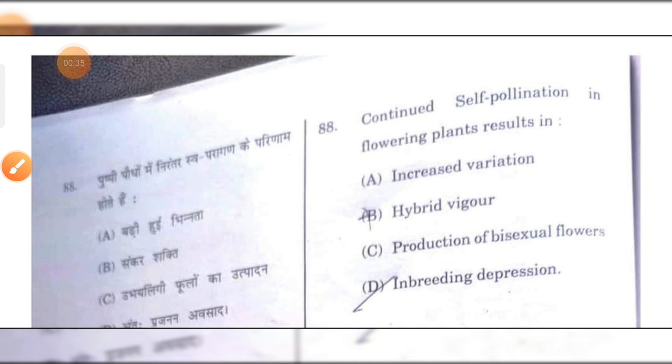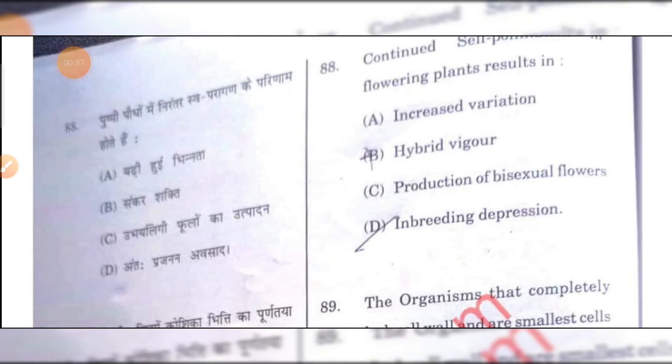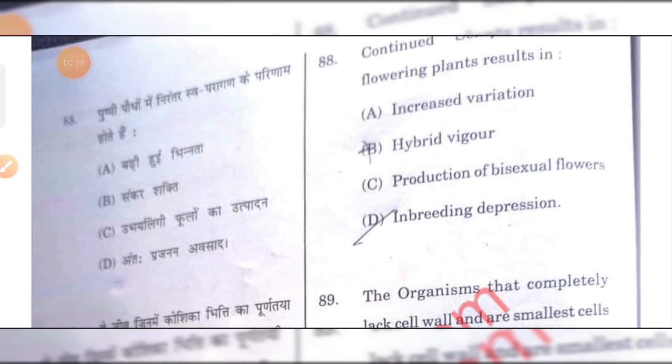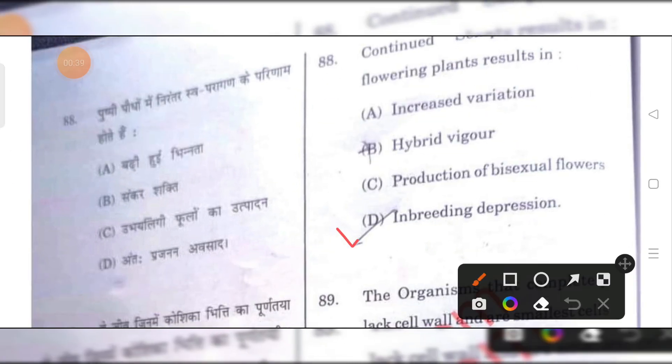Continued self-pollination in flowering plants results in — D is the right answer.